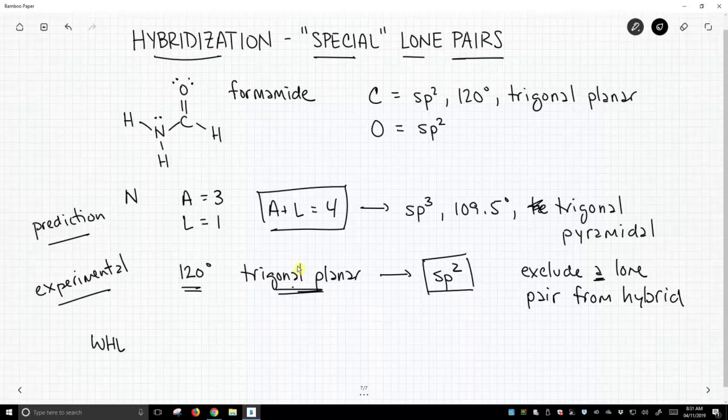So how do we learn to identify this? When do we apply this exception? Well, as it turns out, if you have a double bond and off of that double bond is an atom with a lone pair, then this is a case where the lone pair gets excluded from your a plus l count.